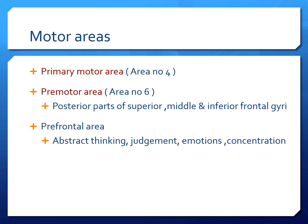The pre-motor area includes the posterior parts of superior, middle, and inferior frontal gyrus. The prefrontal area is concerned with thinking — mainly abstract thinking, judgment making, emotions, and concentration.